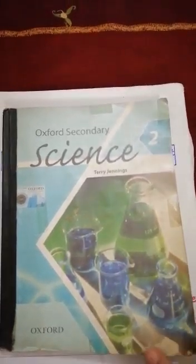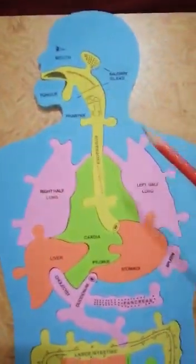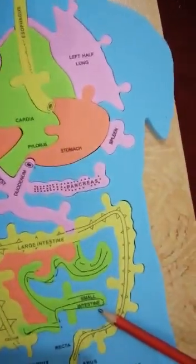Our today's topic is absorption, on page 5. As we know, absorption of food in the blood — meaning digestion — occurs in three places of the digestive system: mouth, stomach, and small intestine.